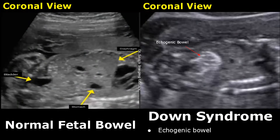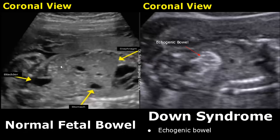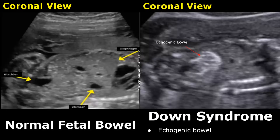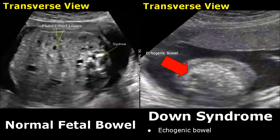This is a coronal image of the fetal bowel; we do not see any hyperechoic region here. Whereas in this image we see echogenic bowel — the bowel is hyperechoic — and this may also be seen in a fetus with Down syndrome. This is a normal small bowel image in a transverse view, and this is an image of echogenic bowel showing a large hyperechoic area.